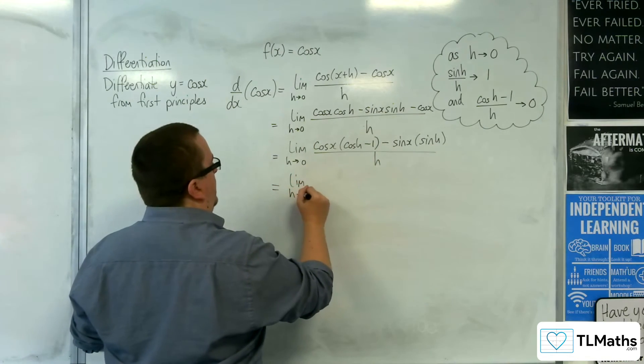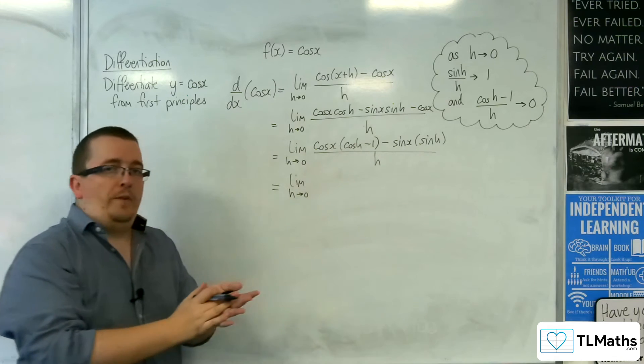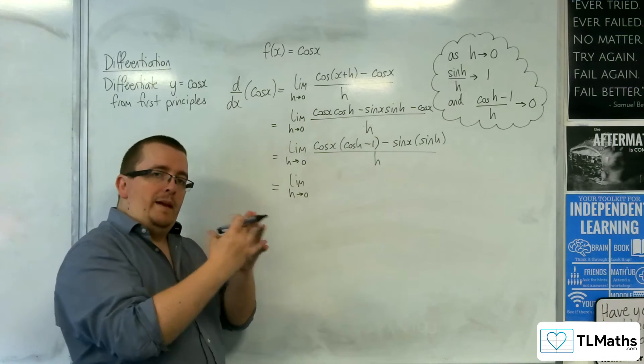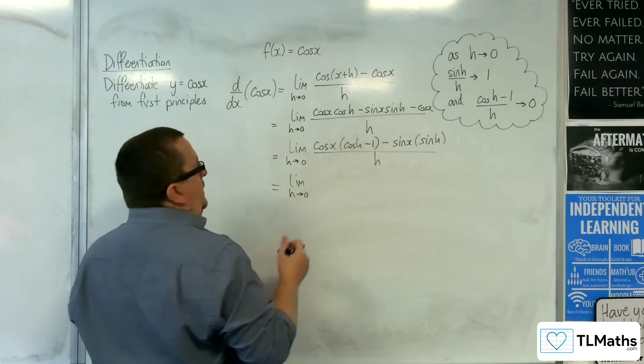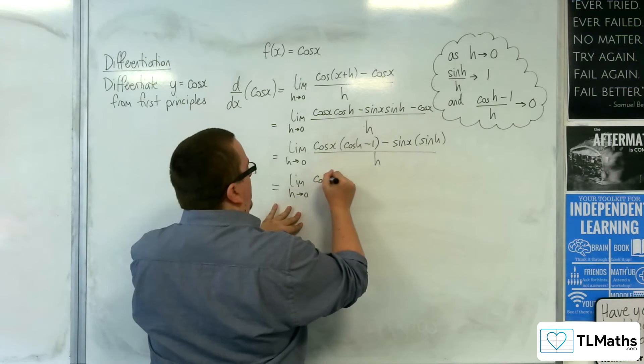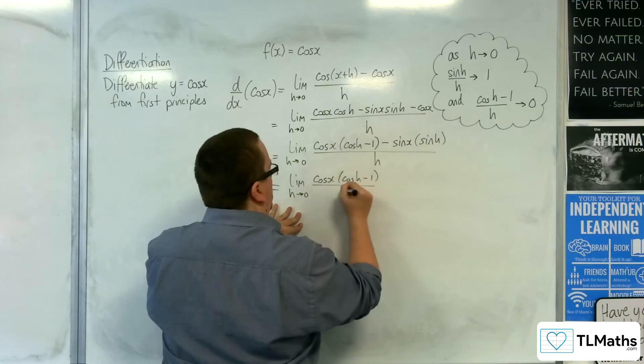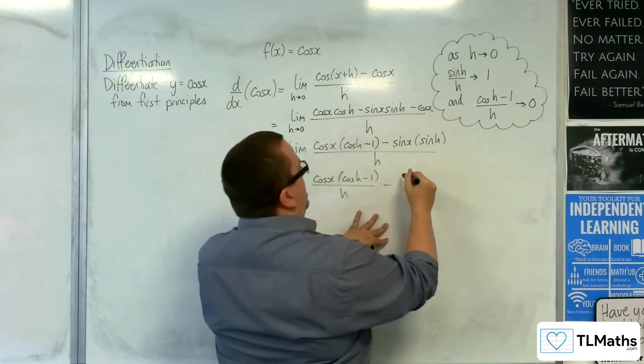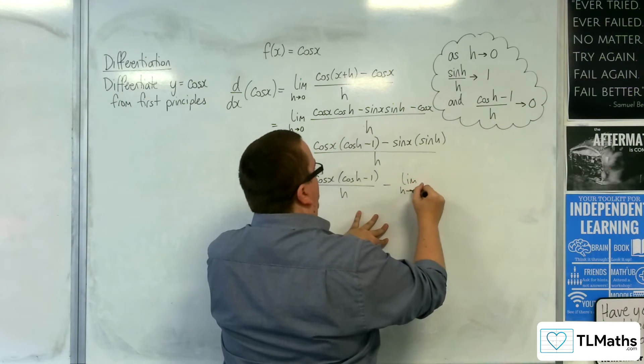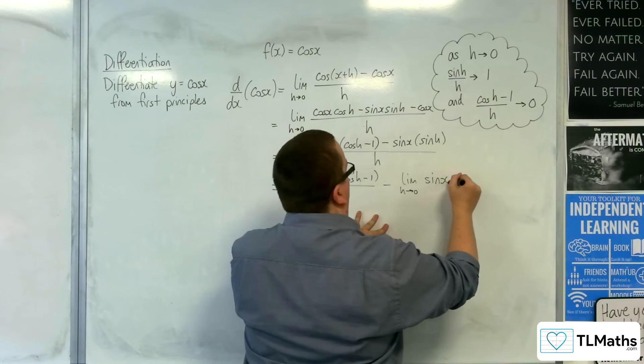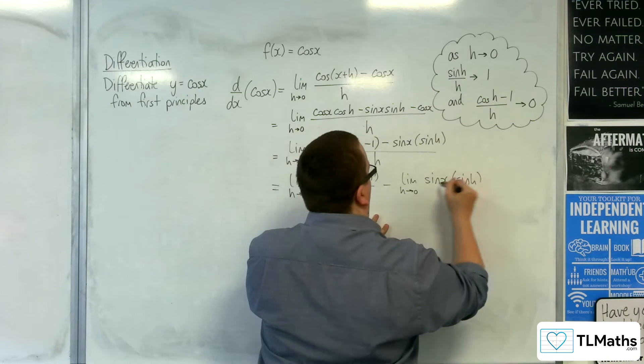Now, as I did in the previous video, you can break that limit apart into two limits. So we've got the limit of cosine x lots of cosine h take away one over h, take away the limit as h tends to 0 of sine x lots of sine h over h.